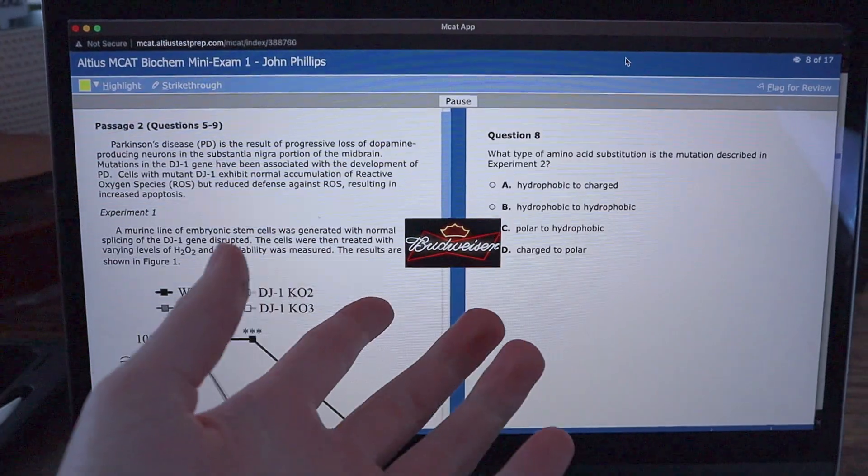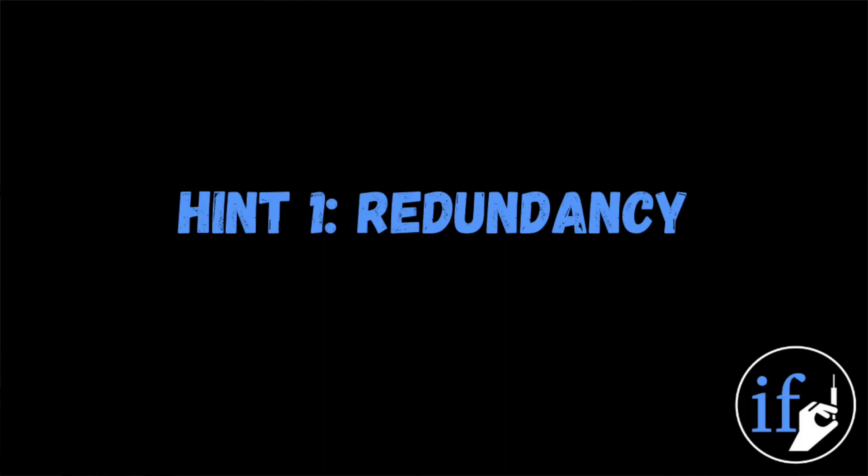But how do you know what they've added? It's not highlighted with a big neon sign next to it. The MCAT has tells as to when it's adding in new material. The first hint is redundancy. With so few words per passage in the MCAT, it seems wasteful for them to say the same thing twice, so pay really close attention when they do that.